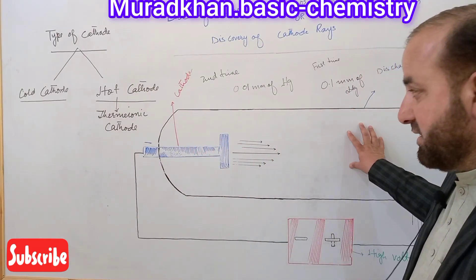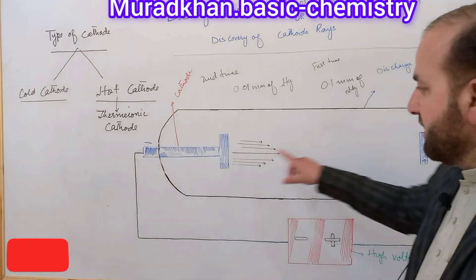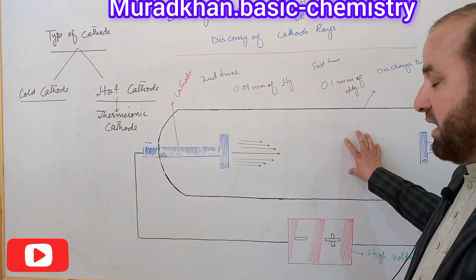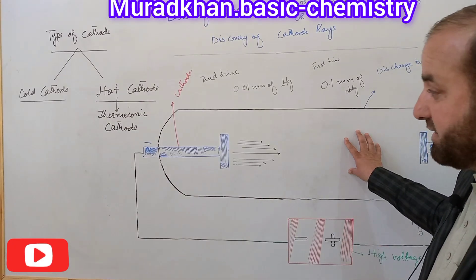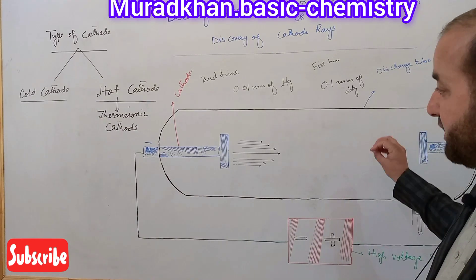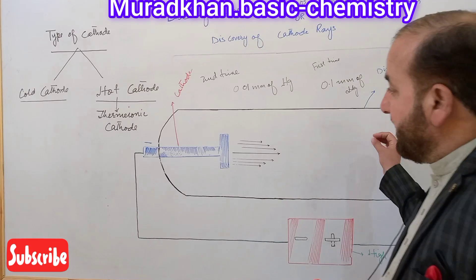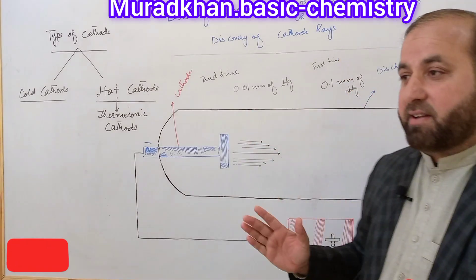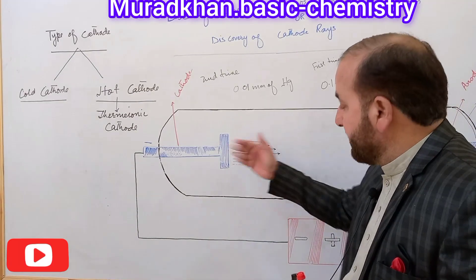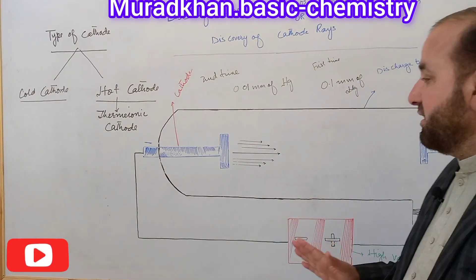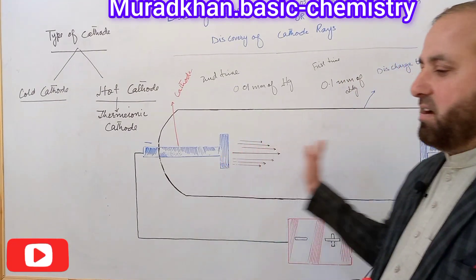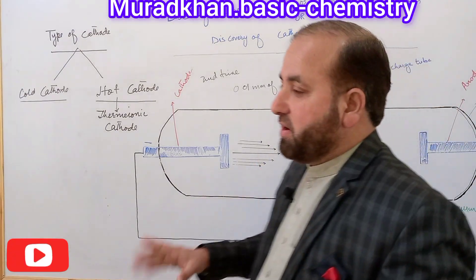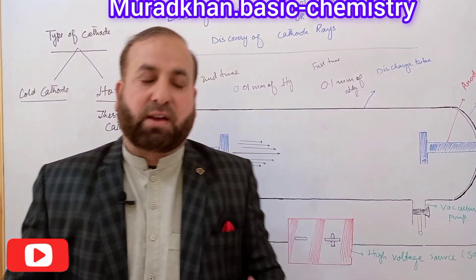Here ionization takes place at the cathode. The cathode is ionized, and positive ions go through the cathode surface due to the strong electric field. As a result, there is an emission of electrons. William Crookes used this cold cathode in his experiments.